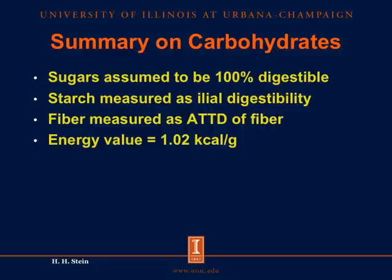In summary for carbohydrates: sugars are absorbed in the small intestine and assumed to be 100% digestible, so we usually don't measure their digestibility. Starch digestibility must be measured as ileal digestibility using cannulated pigs. Fiber is determined as apparent total tract digestibility, and we calculate the energy value of fiber as 1.02 kilocalories per gram. These are the different procedures we use to determine digestibility and energy value of carbohydrates in feed ingredients.